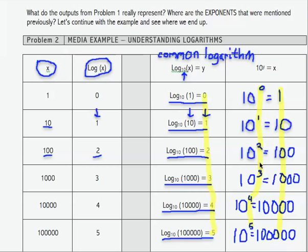0, 1, 2, 3, 4, 5, is the exponent on the base, the base was 10, that gives me the original input value.